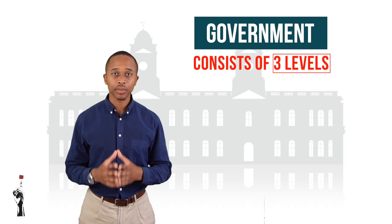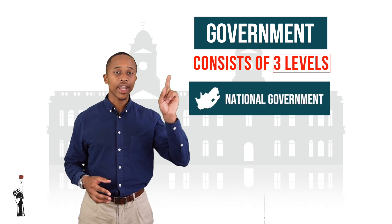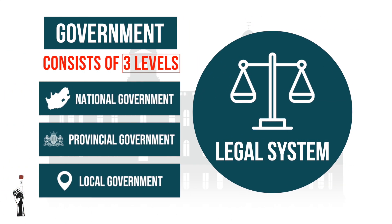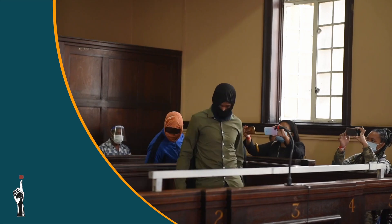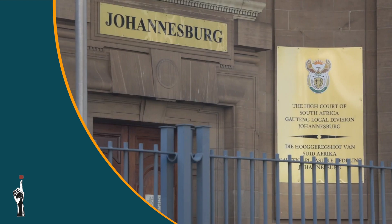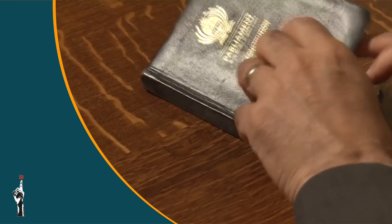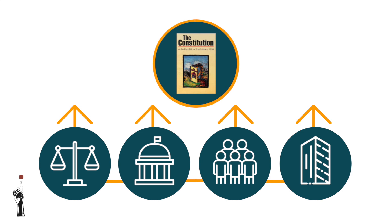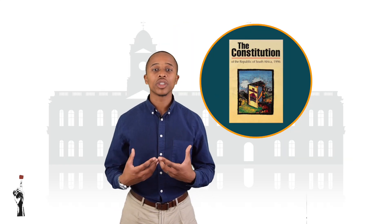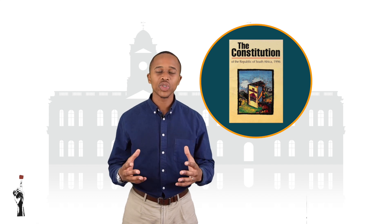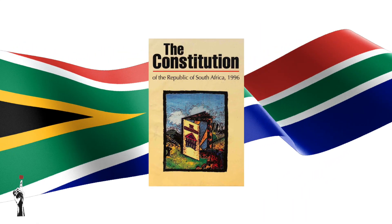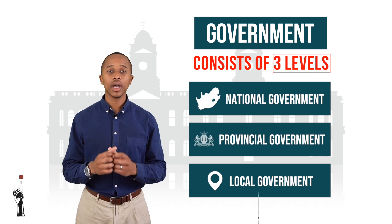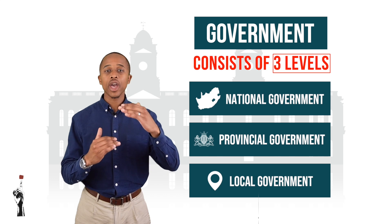In South Africa we have three levels of government: national government, provincial government, and local government. There is also a separate legal system which tells us that all people, groups, and organizations — including the government — are subject to our country's constitution. The constitution is therefore South Africa's highest authority. We are very fortunate to have one of the most progressive constitutions in the world. Let's take a closer look at the different levels of government.